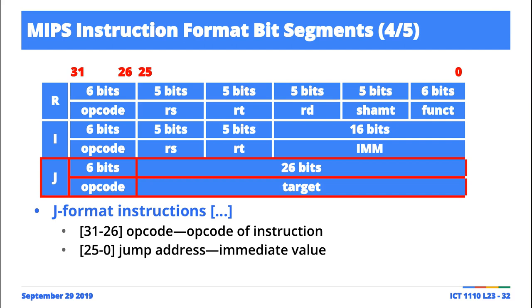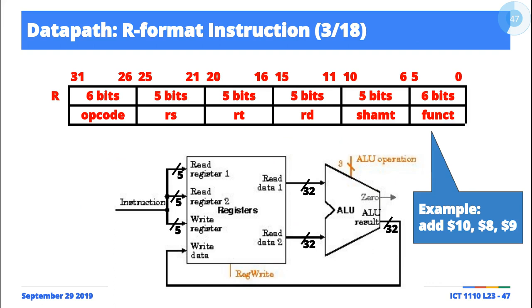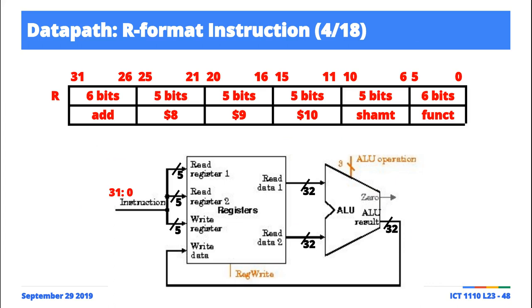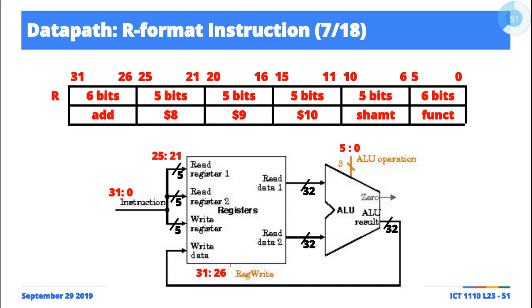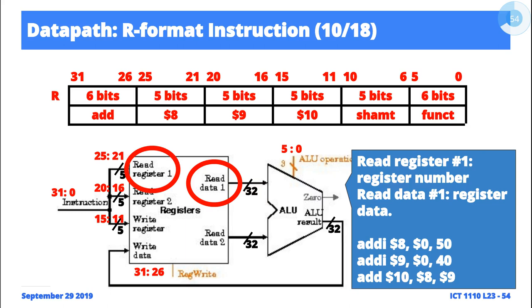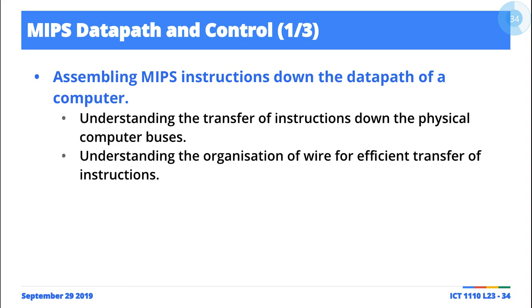For the J-format instruction: op code is bits 31–26, and bits 25–0 represent the jump target address. These bit positions will come up a lot when we start our discussion of the data path — you need to understand them to follow through. For instance, when dealing with the register file, knowing bit positions 25–21 represent RS and 20–16 represent RT is why understanding these positions is important.